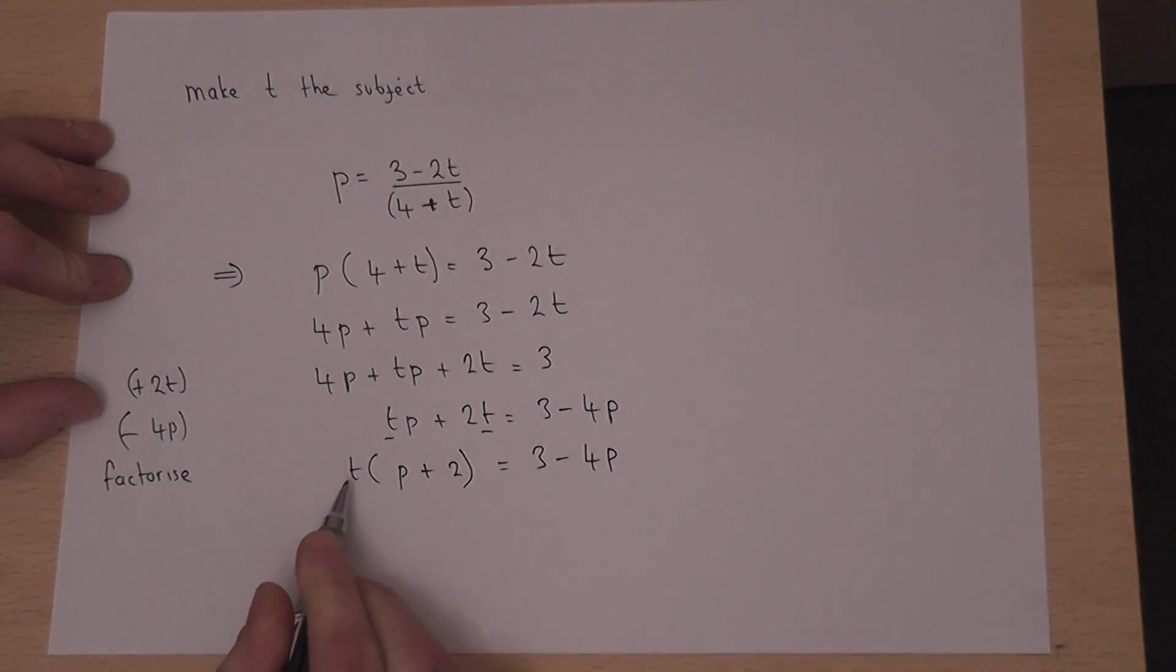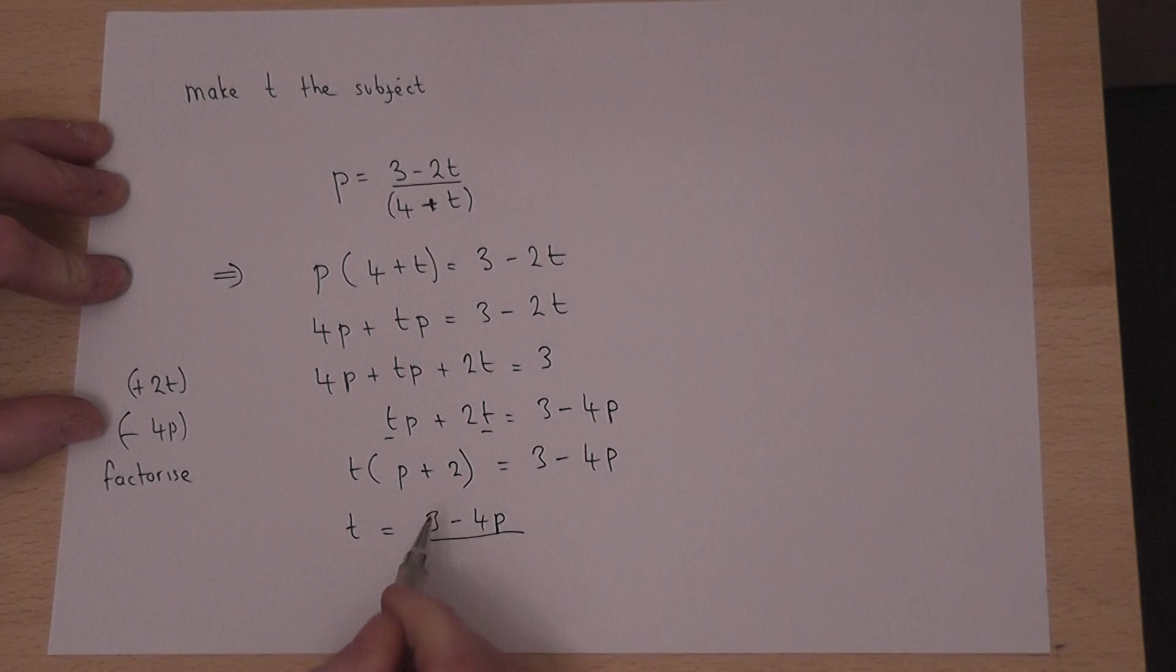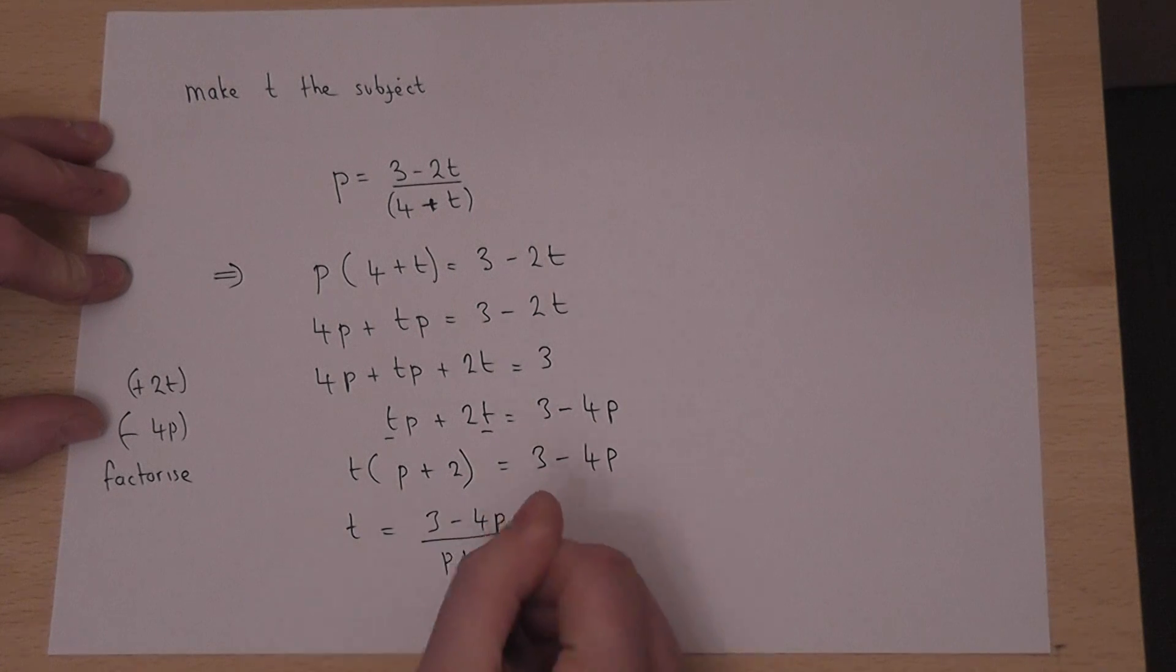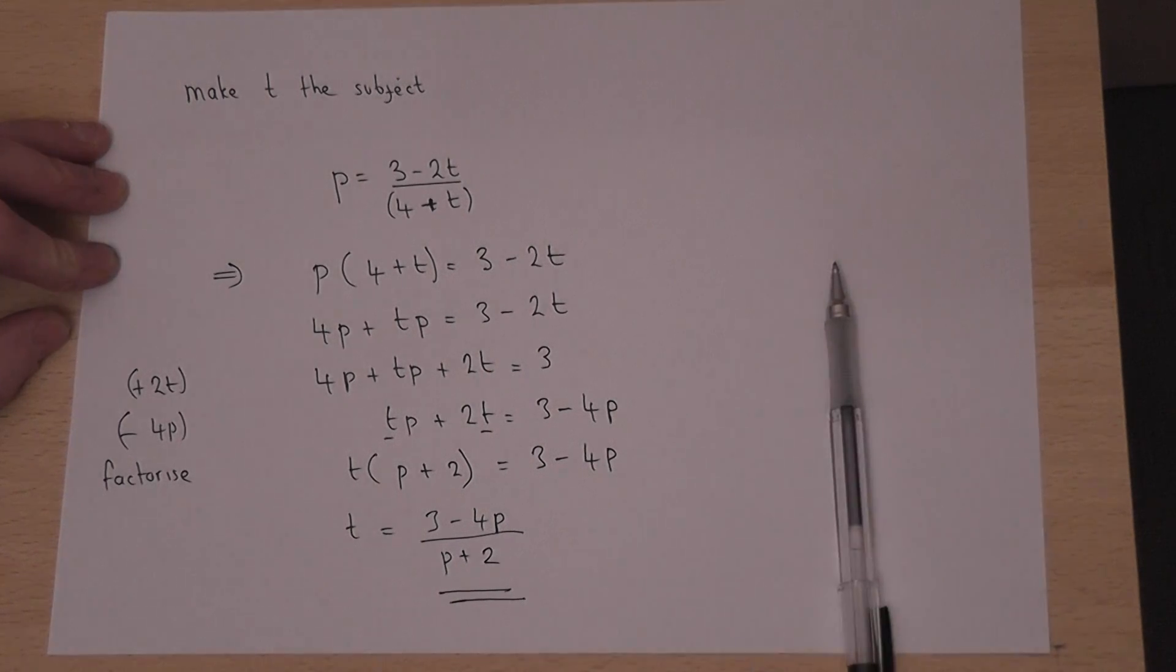And then to find t, I divide by the coefficient. So t will equal 3 take away 4p all over p plus 2. And there we go. That has made t the subject.